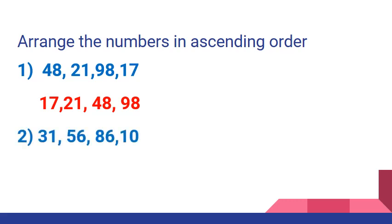Number 2: we have numbers 31, 56, 86 and 10. Now let us arrange these numbers in ascending order. Which one is the smallest number? Yes, 10 is the smallest number.